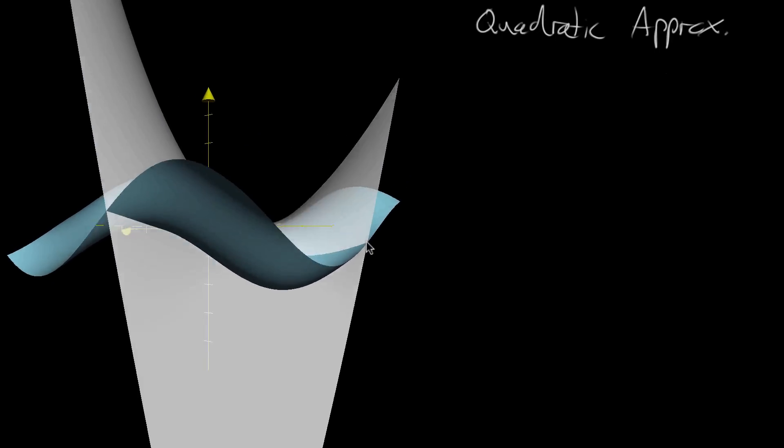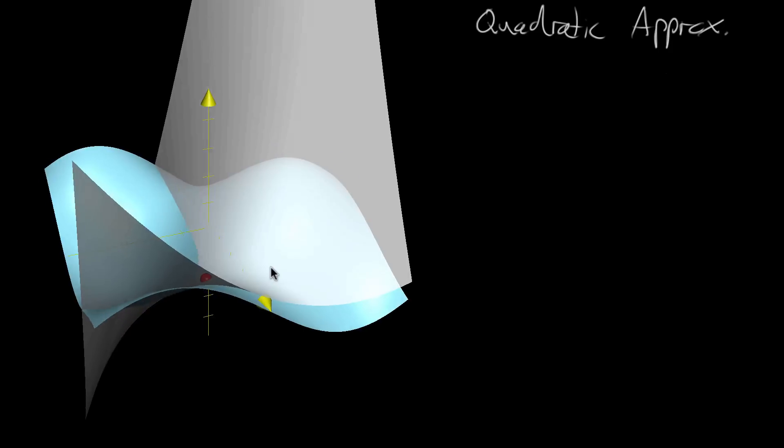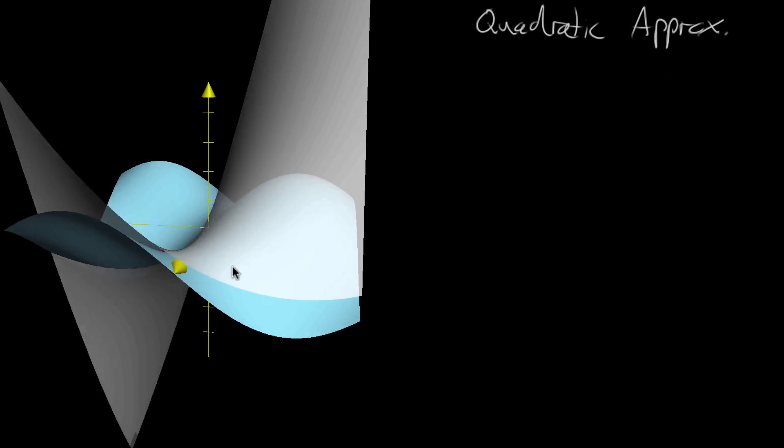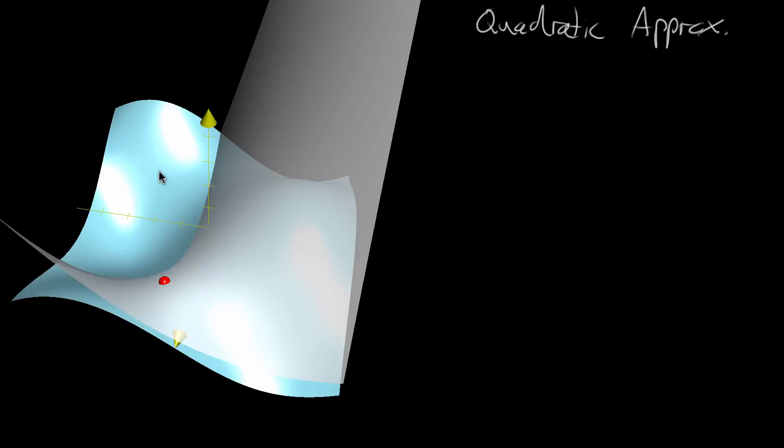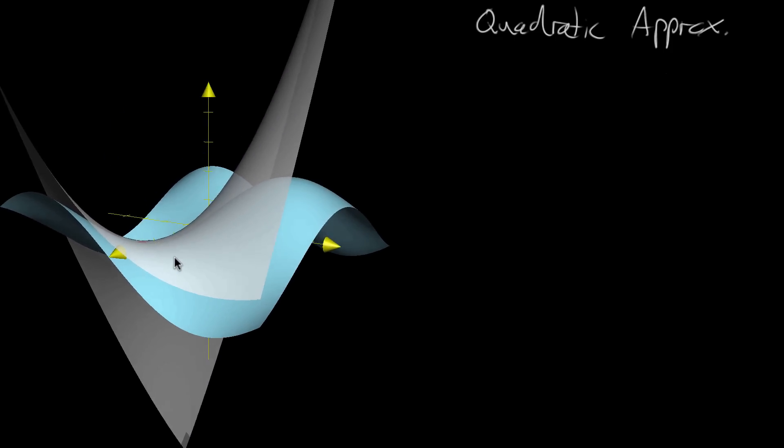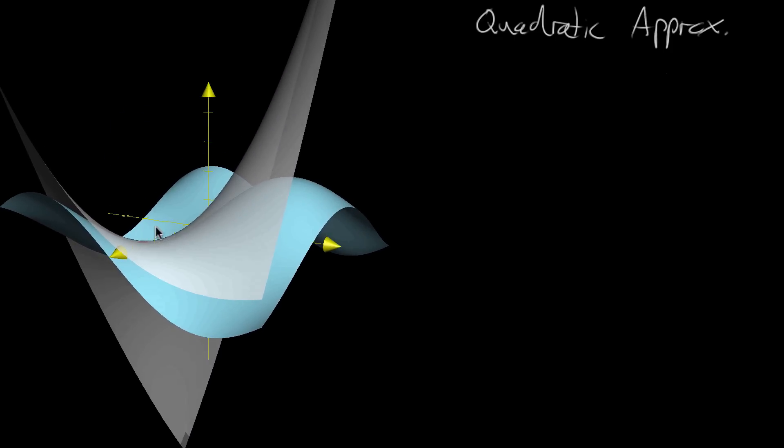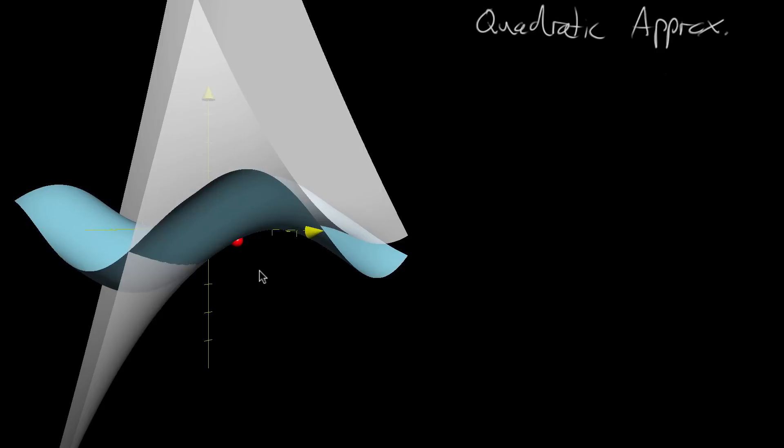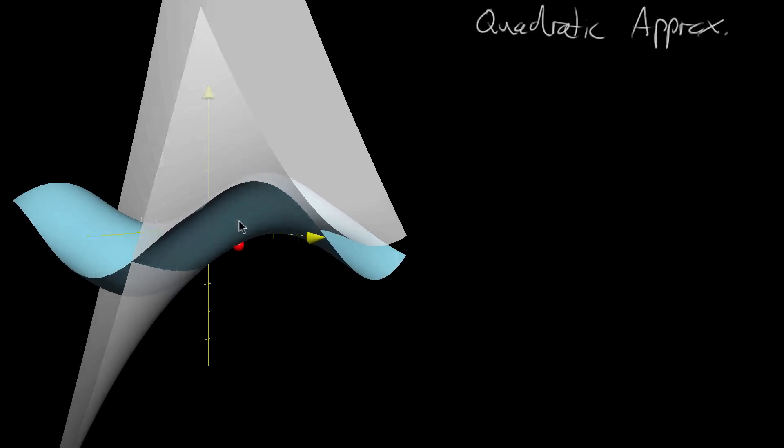And notice that, given that we're dealing in multiple dimensions, that can make things look pretty complicated. Like this right here, if you slice it kind of in this direction, moving things about. If you look at it from this angle, it kind of looks like a concave up parabola. But if you were looking at it from another direction, it kind of looks concave down.